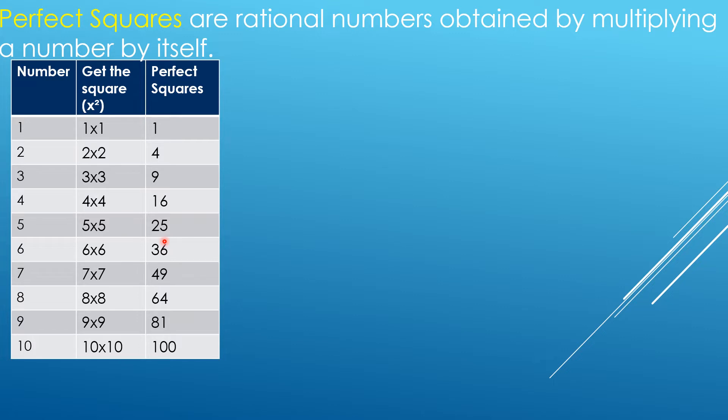If we're going to continue here, you just add more numbers — 11, 12 — then you will get the perfect squares.